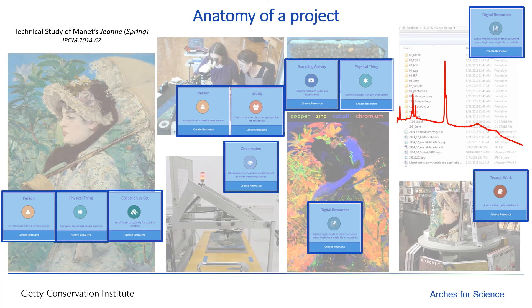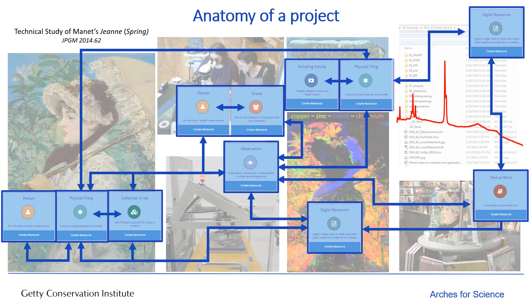But as you hear me talk about it, hopefully it's already clear that it's not just these concepts, but also critically the connections between them that matter. The fact that a sample is a physical thing, for example, that has a specific relationship to the physical thing of the painting — and that's just one of the connections. There are many connections throughout the project that really form the crux of what we're doing in the lab.